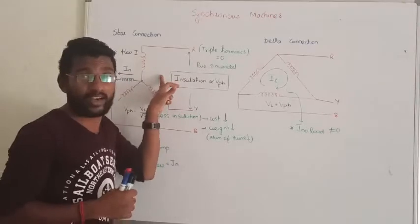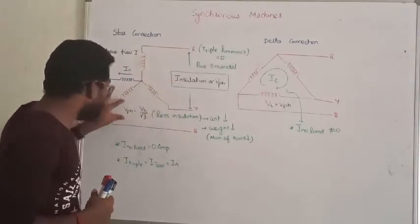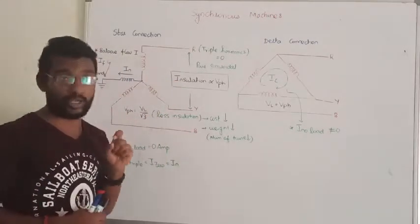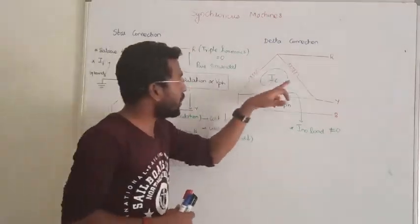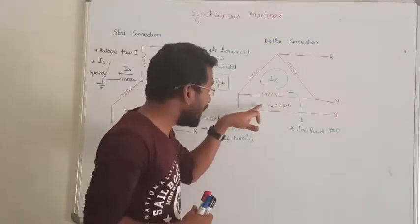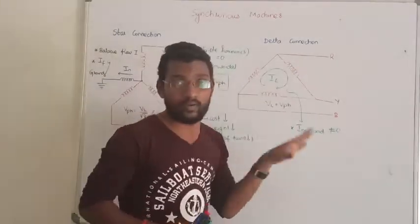In the case of a star connected network, we know the difference. The phase voltage means line voltage is divided by √3. If you observe a delta connected network, line voltage and phase voltage are always equal.